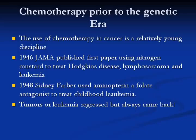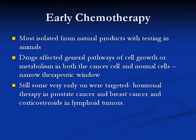The tumors, or leukemia, regressed, but they always came back. Early chemotherapy was mostly isolated from natural products with testing in animals. Drugs affect general pathways of cell growth or metabolism, both in cancer cells and normal cells, with a very narrow therapeutic window — often only one or two dose increases. Some early therapy was targeted, for example, hormonal therapy in prostate and breast cancer and corticosteroids in lymphoid tumors.